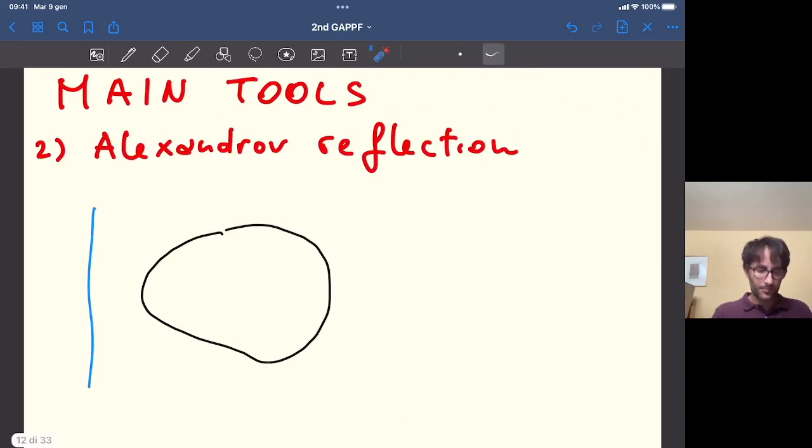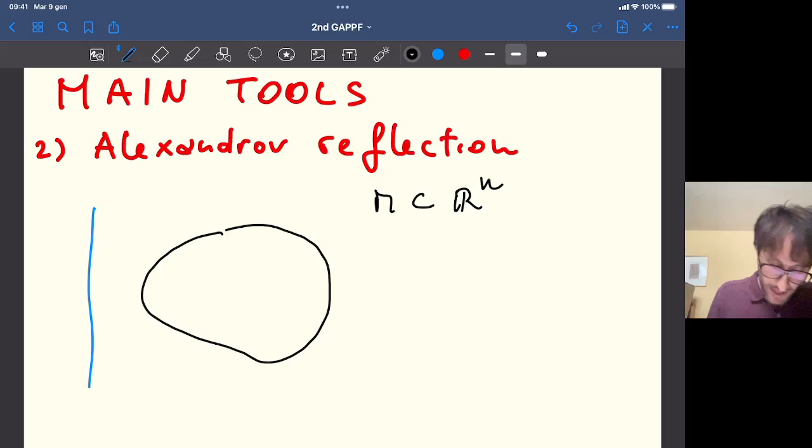The second one is Alexandrov reflections. Sometimes it's called Alexandrov moving plane because it works like this. Suppose to have, for the moment, M is a compact embedded hypersurface in the Euclidean space, again CMC. The famous Alexandrov theorem says that this M here is a round sphere.